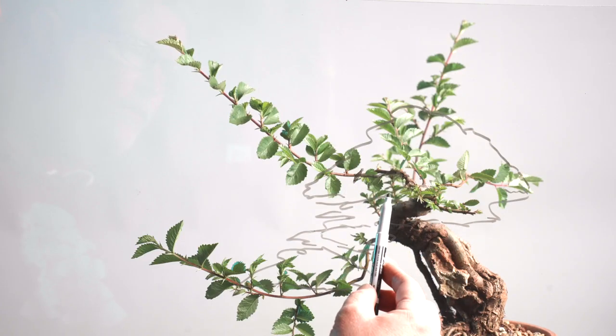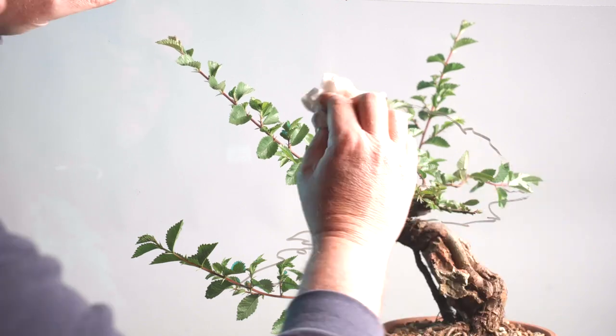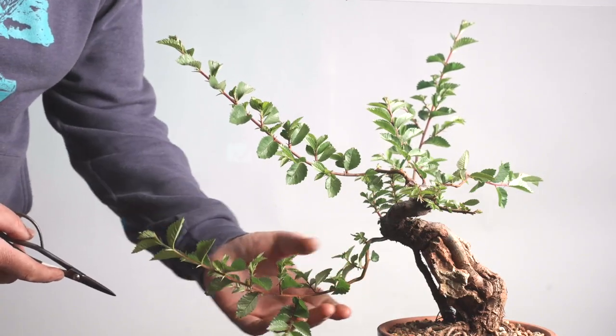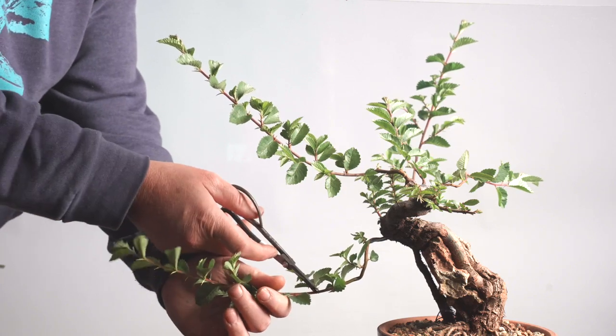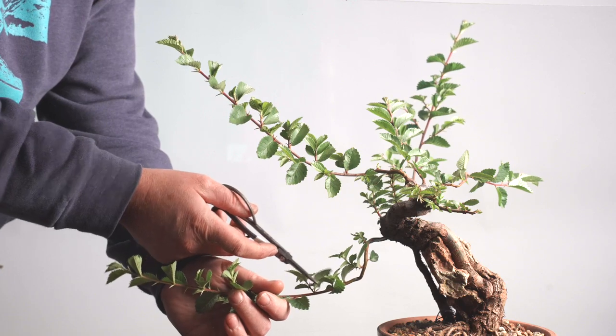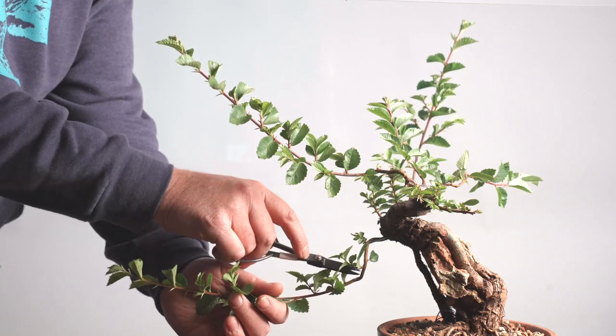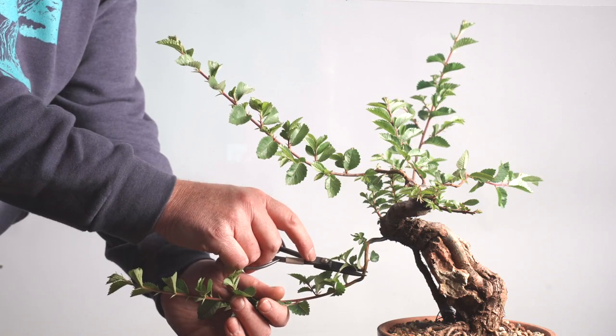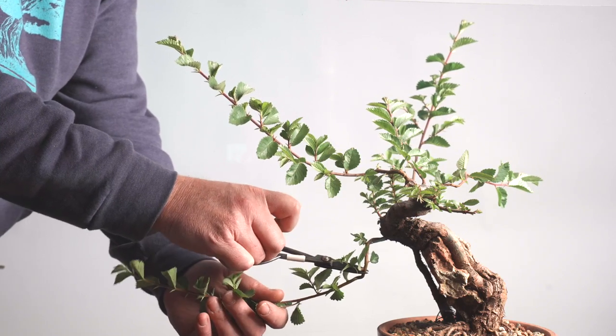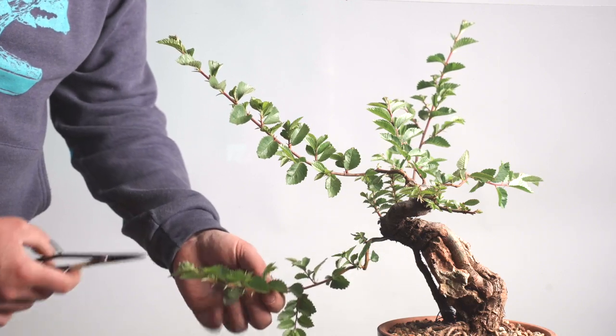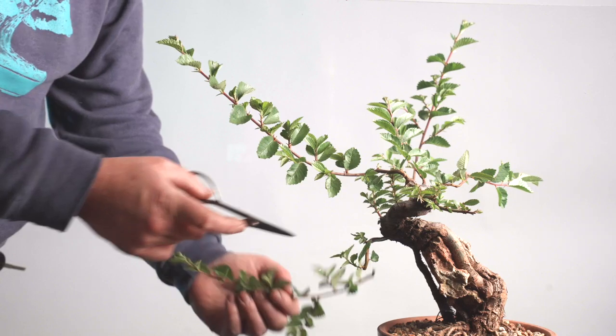So before we go any further with this, let's actually trim the tree. With this branch, if I trim it all the way out here then I will get the strongest growth from this, which is a little bit too far away for the main branch. So I'm actually going to trim it all the way back to this bud, which will then need to be wired after it extends somewhat. If I wanted this branch to be larger, then I could wait to cut it or I can just allow one of these to run for longer.